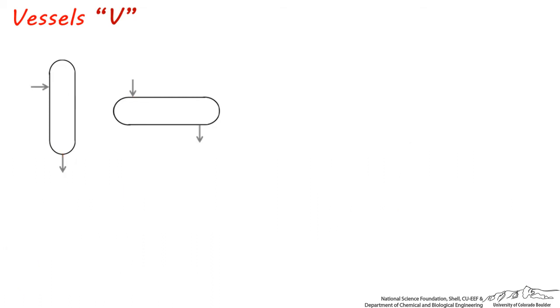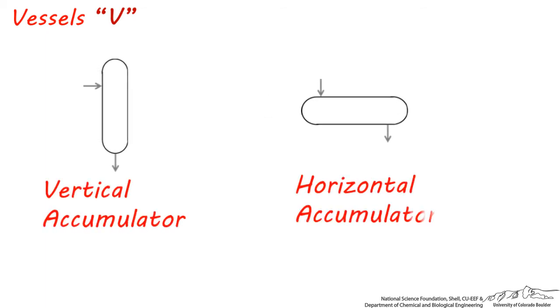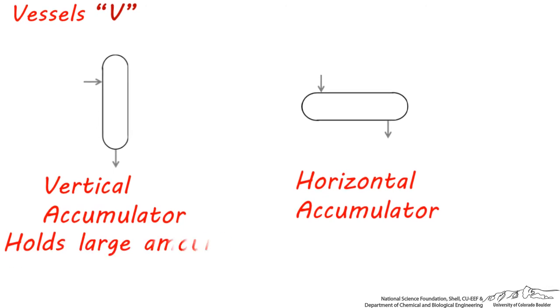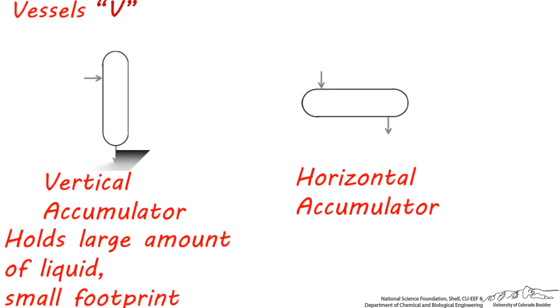I want to show you some important characteristics to consider when using these symbols on a process flow diagram. These vessels are examples of vertical and horizontal accumulators. Vertical accumulators are used when you need a vessel that can hold a large amount of liquid and also has a small footprint.